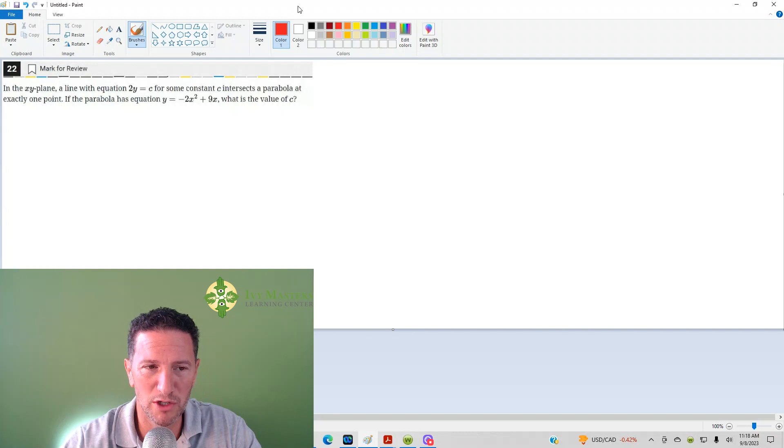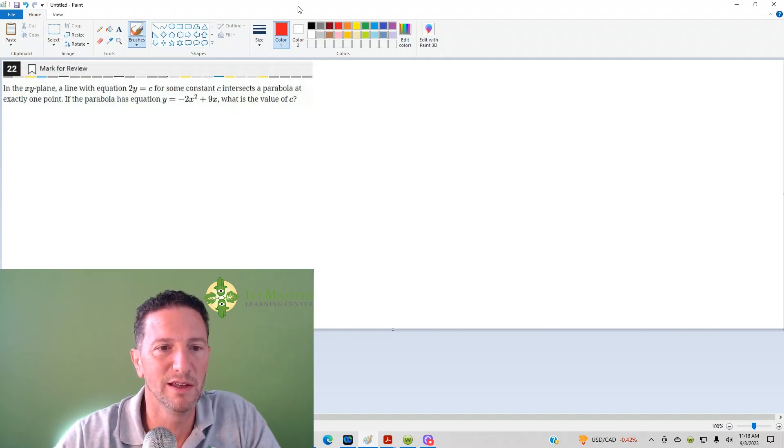Number 22 reads: in the XY plane, a line with the equation 2Y equals C for some constant C intersects a parabola at exactly one point. If the parabola has equation Y equals negative 2X squared plus 9X, what is the value of C?